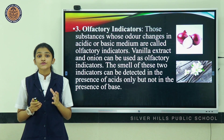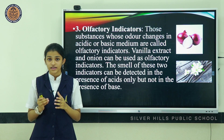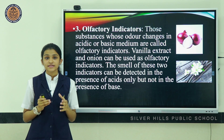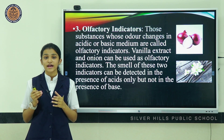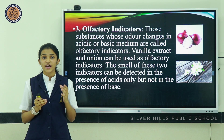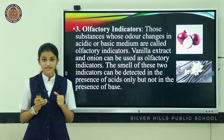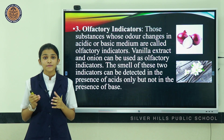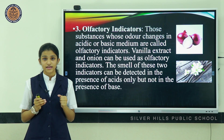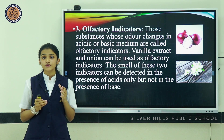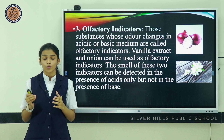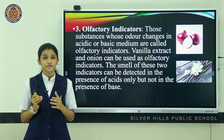The third classification is olfactory indicators — those indicators that change their odor when added into an acidic or alkaline solution. Onion and vanilla extract can be used as olfactory indicators. The smell of these two indicators can be detected in the presence of acid only, and not in the presence of base.